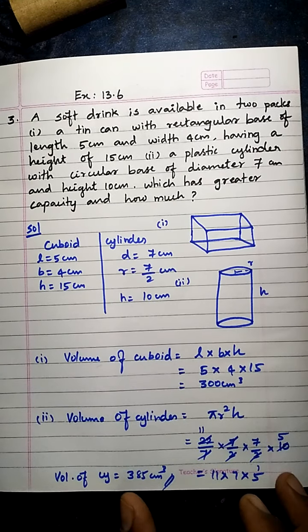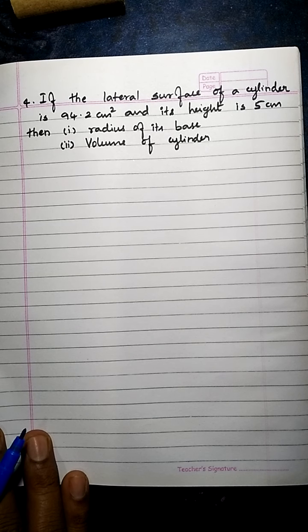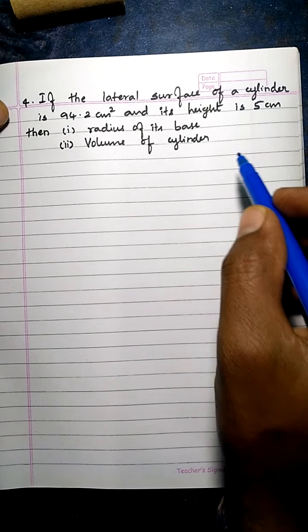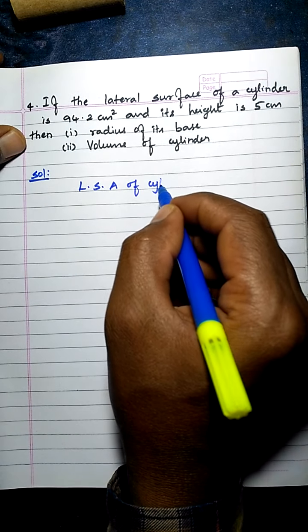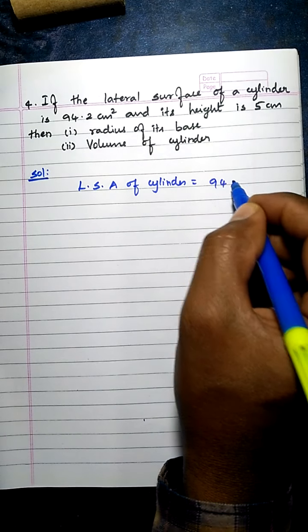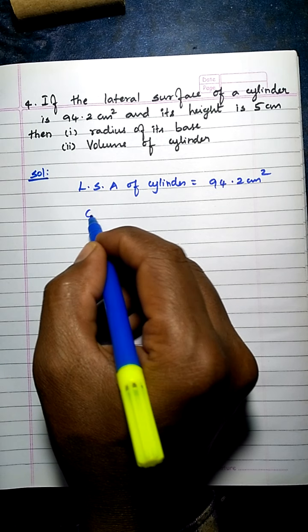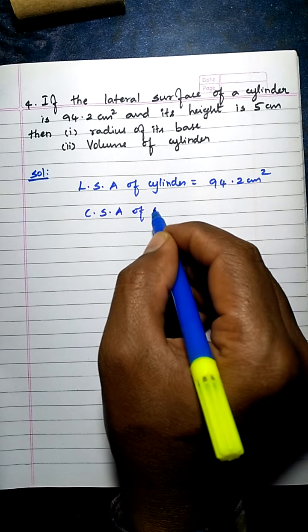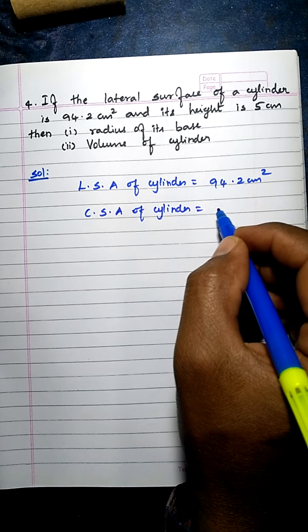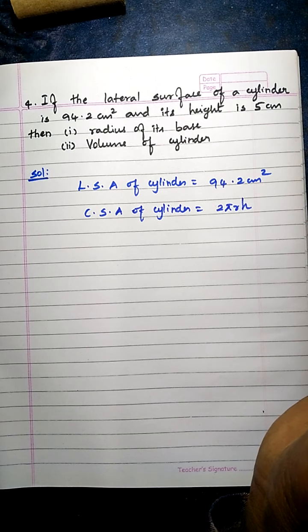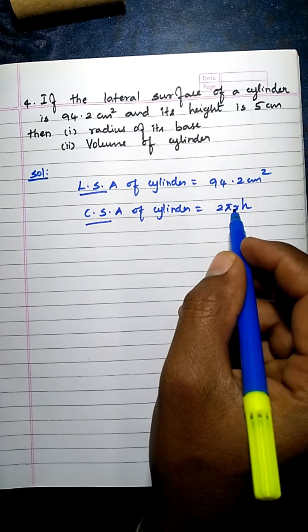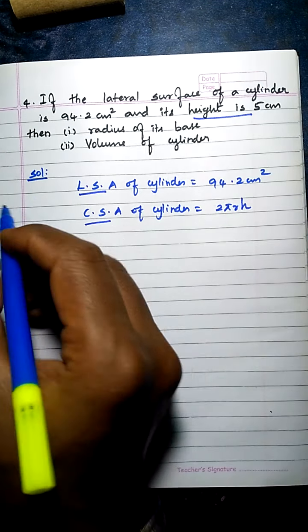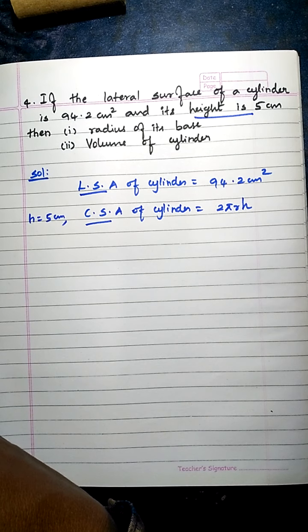Now question number 4. The lateral surface area of a cylinder is given. Lateral surface area is the same as the curved surface area (CSA) of the cylinder. Given: lateral surface area = 94.2 cm². The CSA formula is 2πrh. Height h = 5 cm is also given.